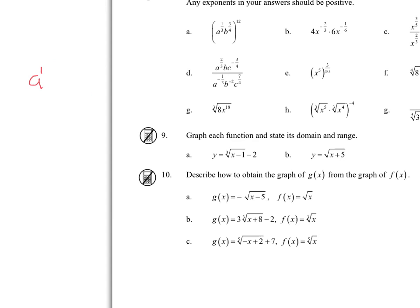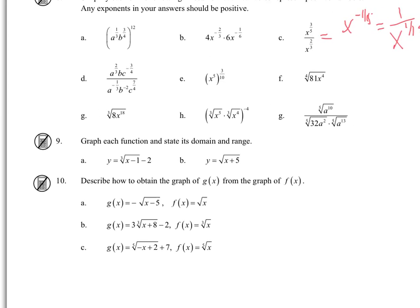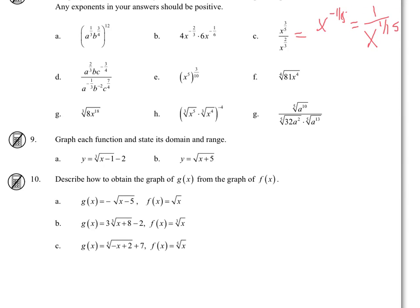Now for e, we can multiply the exponents. So that gives us x to the 15/10, and then that reduces, each divides by 5, so that's going to be 3/2.